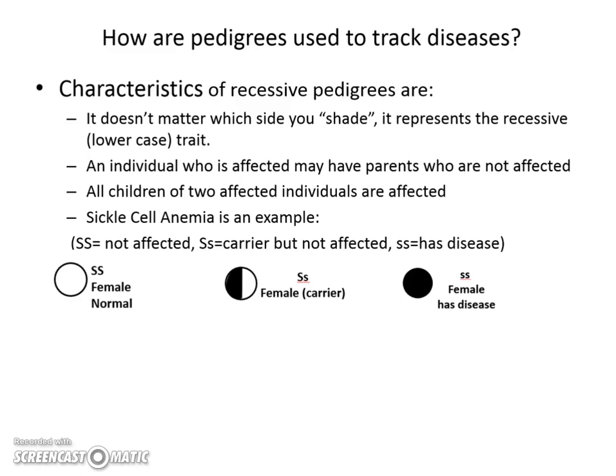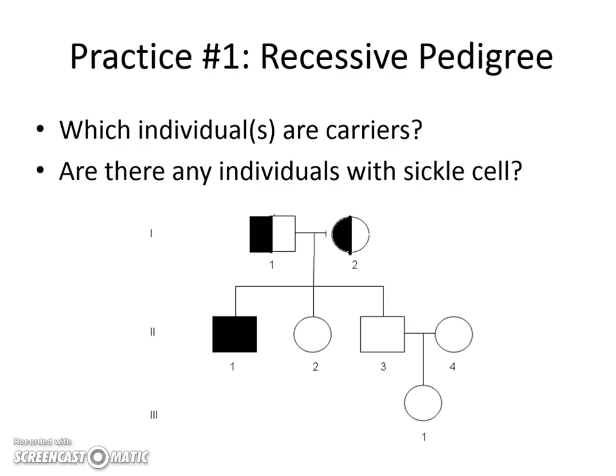Individuals who do not carry the trait at all are completely left blank. This female has two dominant alleles and does not show sickle cell. The one in the middle shows a carrier — a carrier is someone who is half shaded in. Each pedigree should have a key or a title that tells you what you're tracking: a recessive trait, dominant trait, or sex-linked trait, and the name of it, such as red hair, sickle cell anemia, or hemophilia. In this case, we're going to cover recessive pedigrees first.